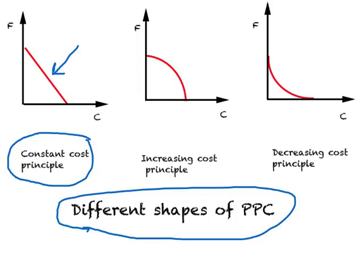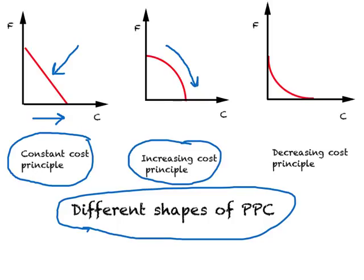Under the Constant Cost Principle, as we increase production of clothing, we give up the same amount of food. Compare this to the second shape, which reflects the Increasing Cost Principle. Look at this PPC — it is concave to the origin. As you go down this curve, the absolute value of the slope of the PPC increases. In other words, the absolute value of Opportunity Cost of Clothing increases, meaning as you produce more and more clothing, you have to give up more and more food. This is the Increasing Opportunity Cost Principle.